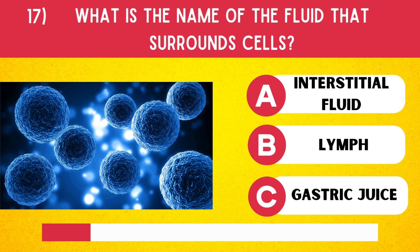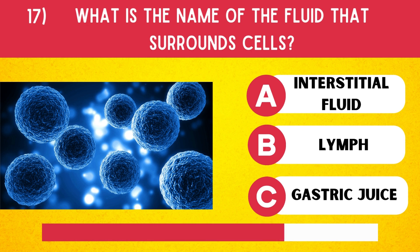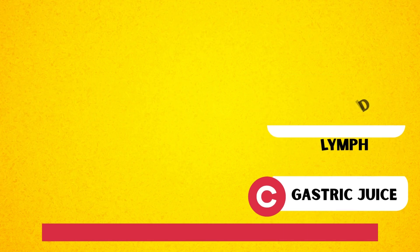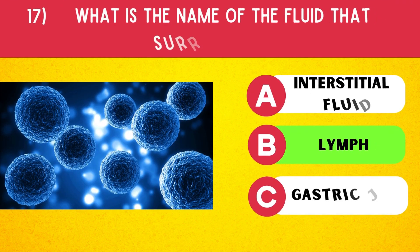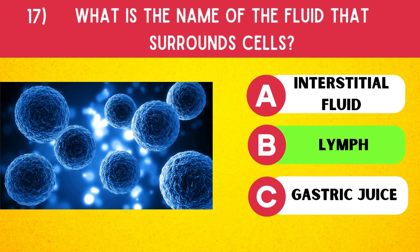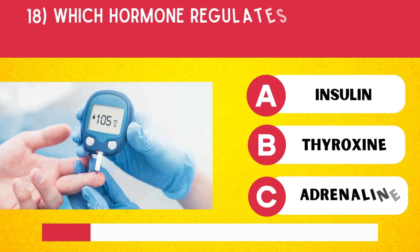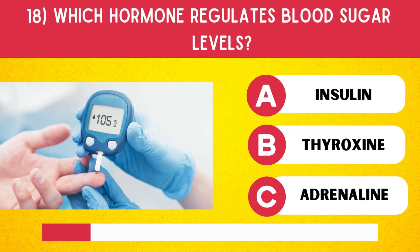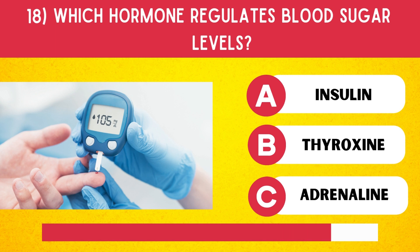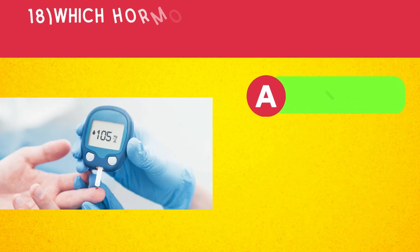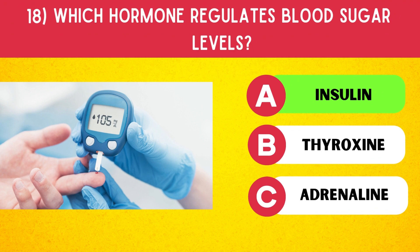What is the name of the fluid that surrounds cells? Lymph. Which hormone regulates blood sugar levels? Insulin.